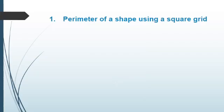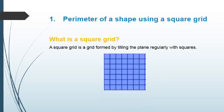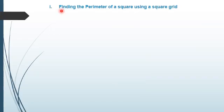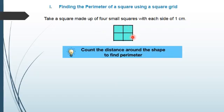Now coming to our first objective: the parameter of a shape using a square grid. A square grid is a grid formed by tiling the plane regularly with squares. We will use this square grid to find out the parameter of any shape. In number 1, finding the parameter of a square using a square grid. We take a square made up of four small squares with each side of 1 cm. In finding the parameter, we want to know how far it is to move around the outside of the shape, so we need to count the distance around the shape.